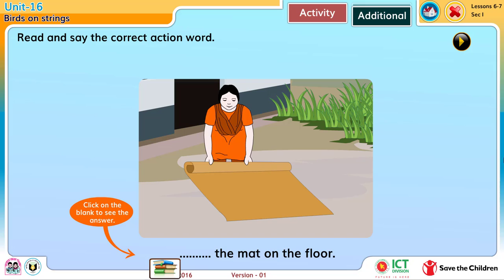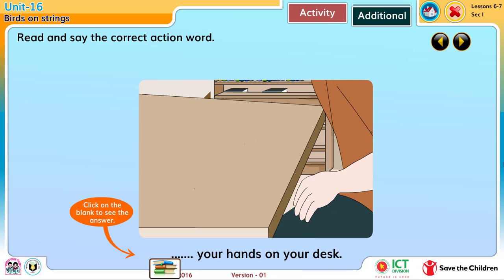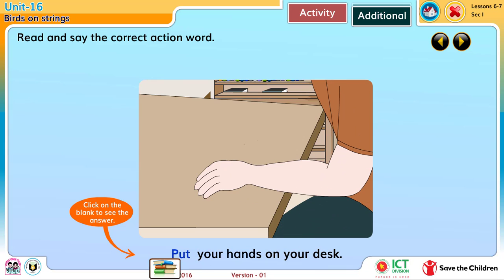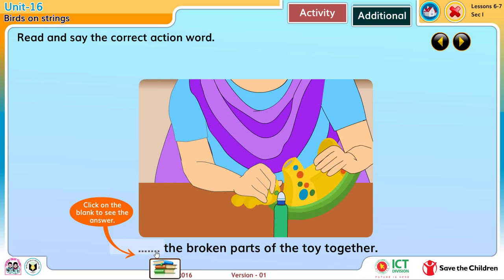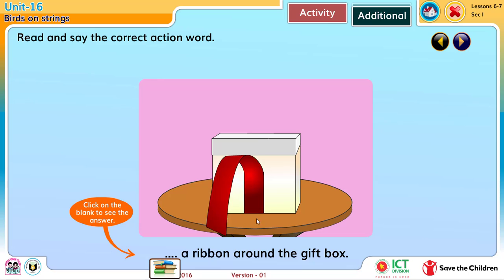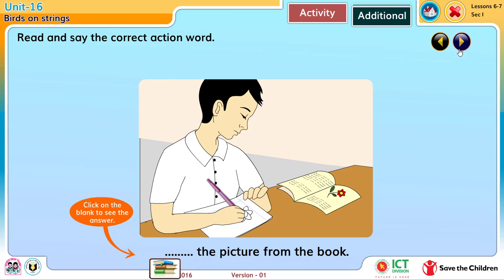Read and say the correct action word. Lay the mat on the floor. Put your hand on your desk. Press the switch to start the machine. Glue the broken parts of the toy together. Tie a ribbon around the gift box. Copy the picture from the book.